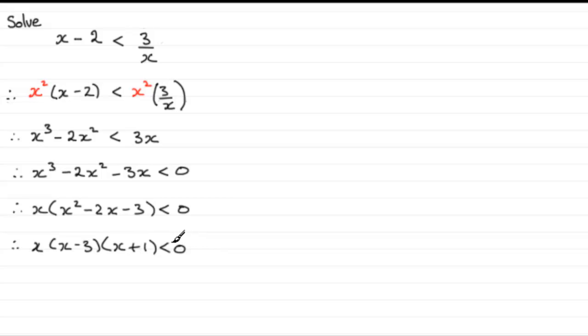Now just like we handled quadratic inequalities in the past, we found out the critical values, we found out where this equaled 0. So we've got the critical values, what are they going to be? What are the values of x that makes this equal 0? Well they're going to be x equals 0 or we'll have x equaling 3 or we'll have x equaling minus 1.